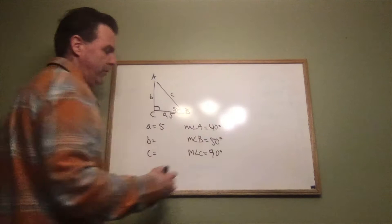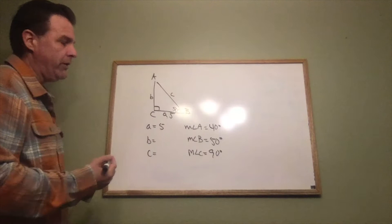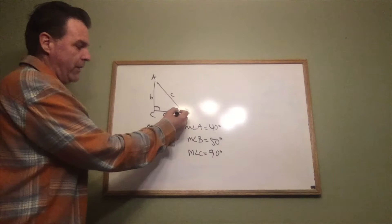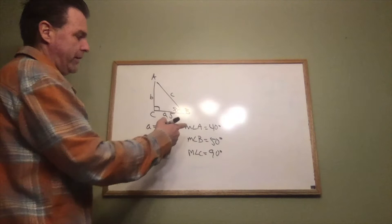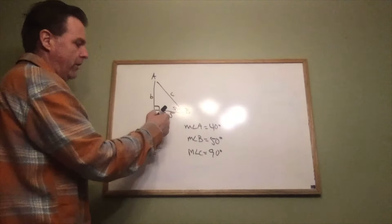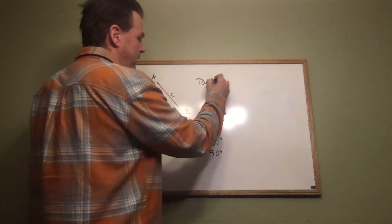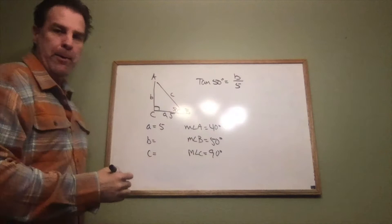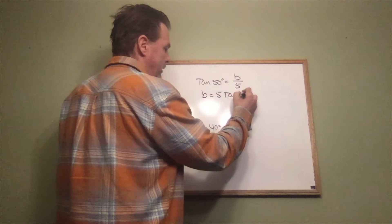Now I just need to find the missing sides using trig. I'll use the known exact values — side a equals 5 and angle B equals 50 degrees. To find side b, I note that b is opposite and a is adjacent to angle B, so I'll use the tangent: tangent of 50 degrees equals opposite over adjacent, which is b over 5. Solving for b gives b equals 5 times the tangent of 50 degrees.